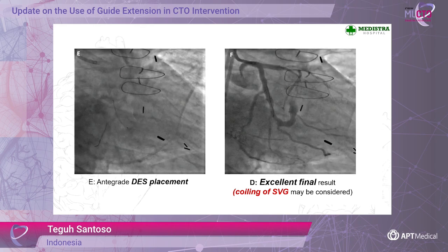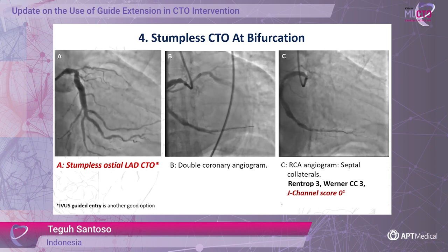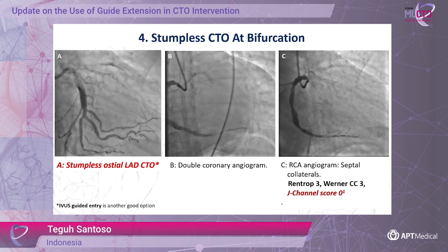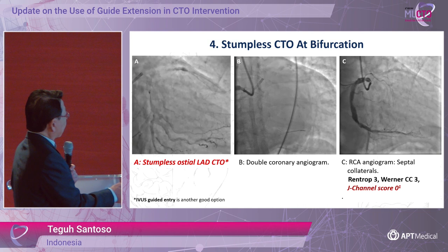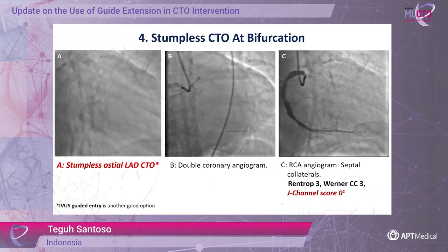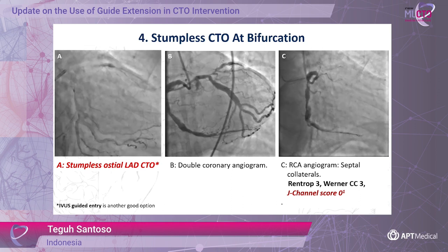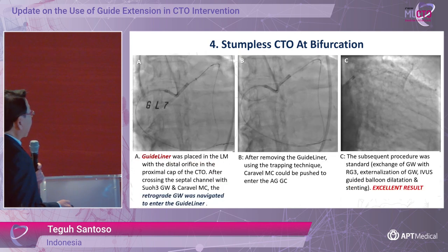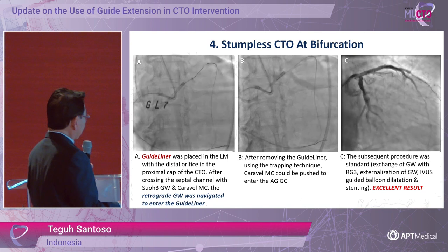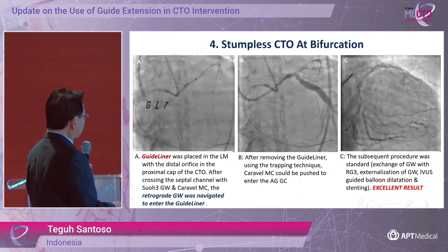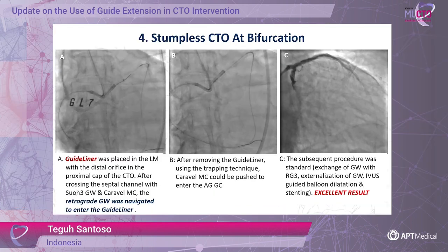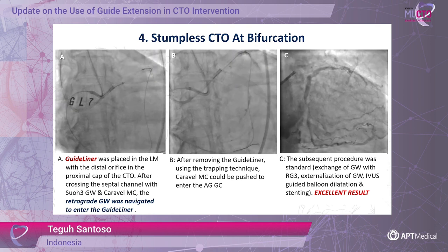Another indication for guide extension is at a bifurcation site. Here the bifurcation is at the ostium of the LAD — a stumpless ostial LAD CTO. The guide extension helps direct our wire. Fortunately, the patient has good septal collaterals, Rentrop 3, Werner CC3, J-channel score zero. The GuideLiner was placed in the left main exactly at the proximal cap. After crossing the septal channel with the Sion wire and Caravel, the retrograde wire was navigated into the GuideLiner using the trapping technique, and the subsequent procedure was standard with an excellent result.